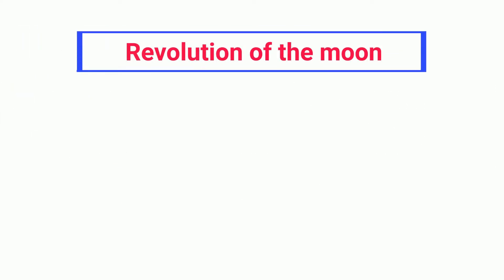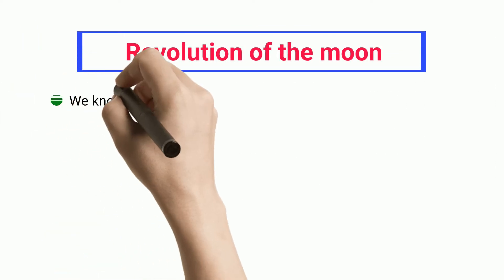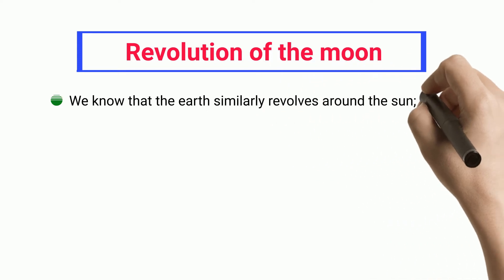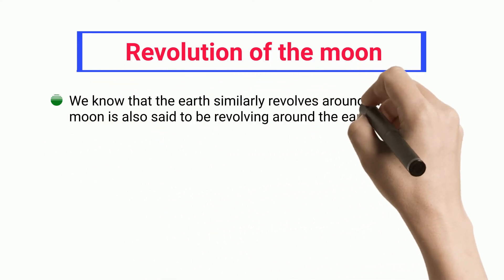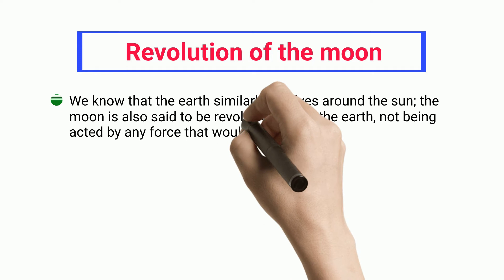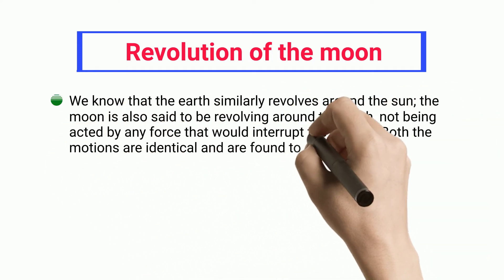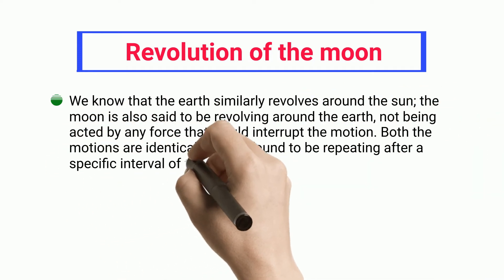Revolution of the moon: We know that the earth revolves around the sun. The moon is also said to be revolving around the earth, not being acted by any force that would interrupt the motion. Both motions are identical and are found to be repeating after a specific interval of time.